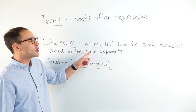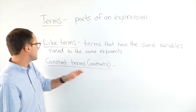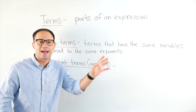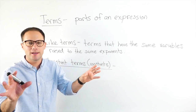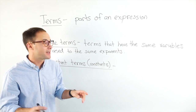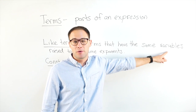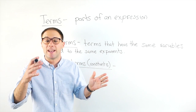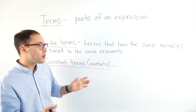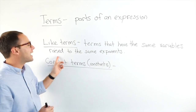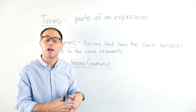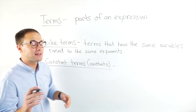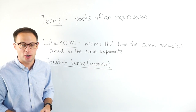Like terms are terms that have the same variables, but also raised to the same exponents. If you have an x and a y, those are not like terms because they're not the same variables. If you had an x squared and an x cubed, those are the same variables but they're not raised to the same exponents, so they also would not be like terms.